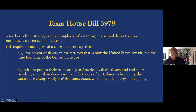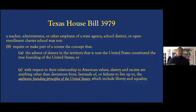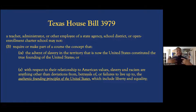Part of Texas House Bill 3979 says a teacher, administrator, or other employee of a state agency, school district, or open enrollment charter school may not require or make part of a course the concept that the advent of slavery in the territory that is now the United States constituted the true founding of the United States. More importantly, with respect to American values, slavery and racism are anything other than deviations from, betrayals of, or failures to live up to the authentic founding principles of the United States, which include liberty and equality. This is really hypocritical coming from Texas, because Texas was founded in part because the settlers wanted to continue slavery — that is one of the main reasons why Texas is even a state.